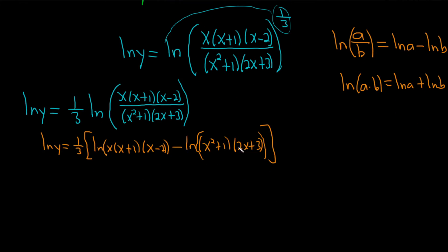Now we're going to use the product rule multiple times. So this is the natural log of y equals 1 over 3. I'm going to keep my bracket. So it's the natural log of x. That's the first one. Plus the natural log of x plus 1. That's the second one. Plus the natural log of x minus 2. That's the third one.